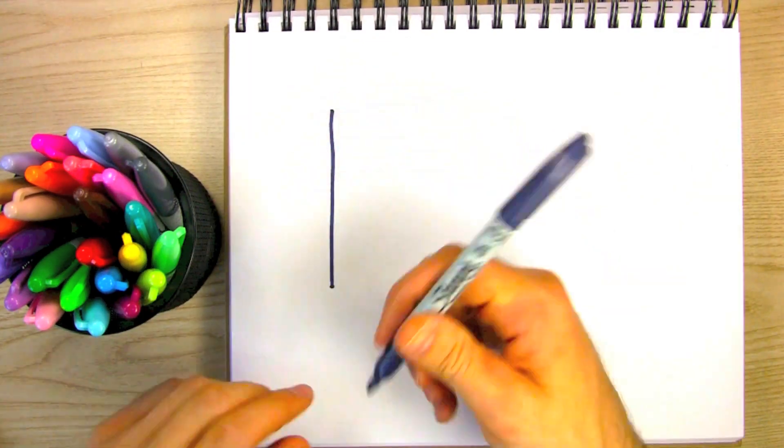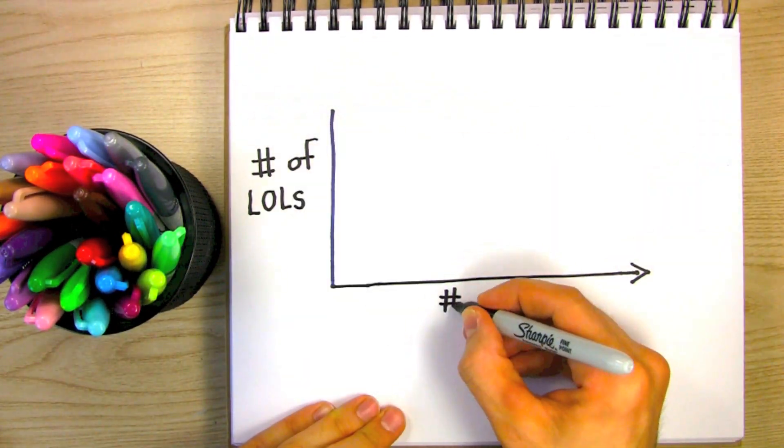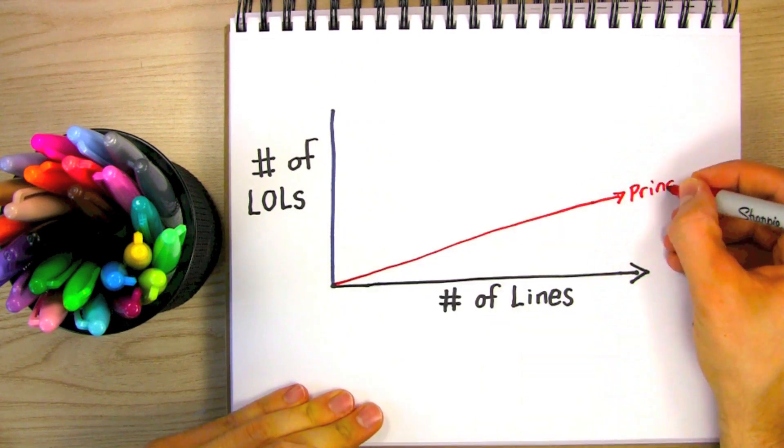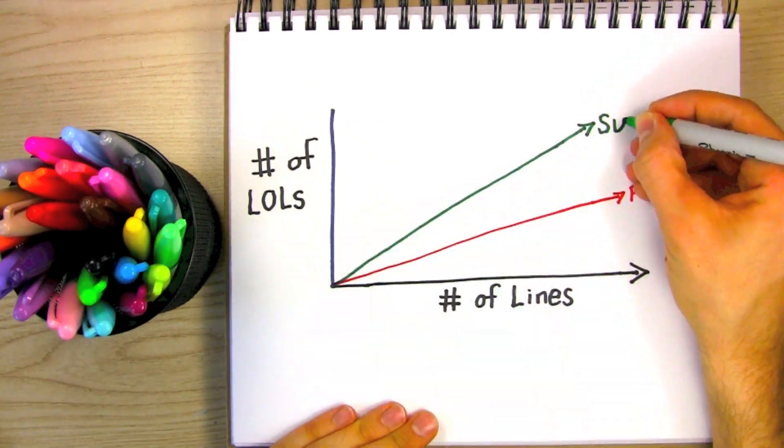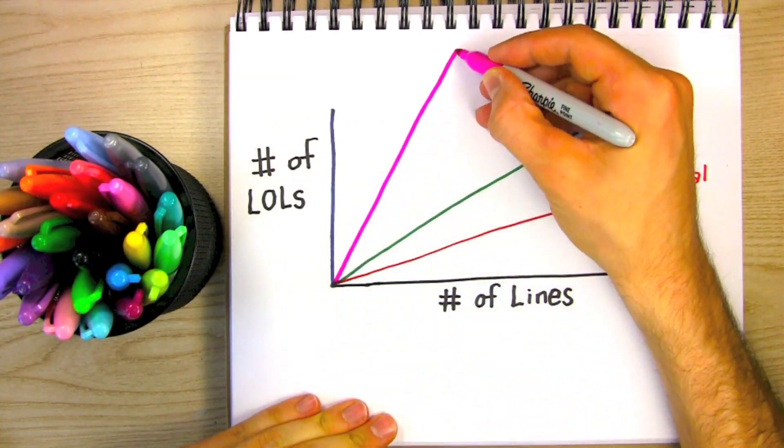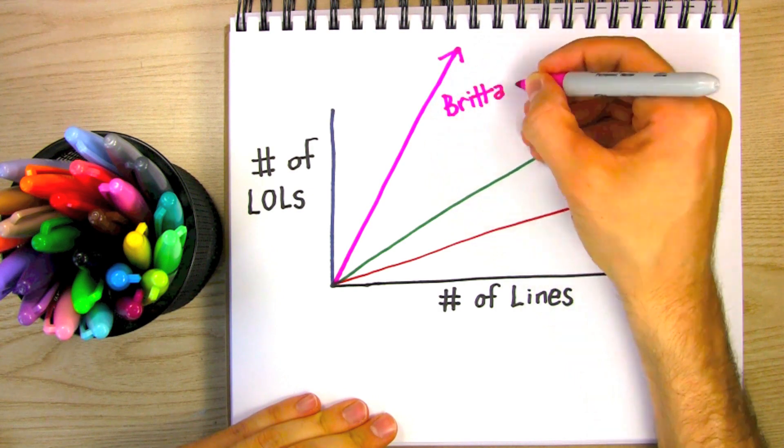As you can see, there is a direct correlation between the number of lines spoken in a given episode by the principal, Sue Sylvester, or Brittany, and the number of times I laugh out loud.